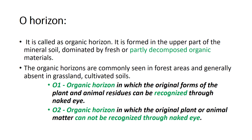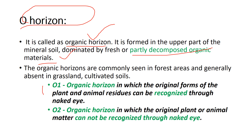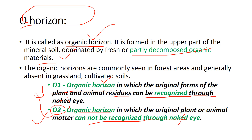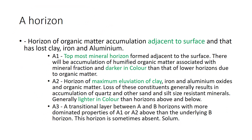The O horizon is the organic horizon, formed completely of decomposed organic materials. It is classified into two types: O1, where you can still recognize plant and animal residues on the surface with the naked eye, and O2, where you cannot recognize the residues with the naked eye. Organic horizons are commonly seen in forest areas where decomposed materials are not cleared by human activity. They are generally absent in grasslands and cultivated soils.